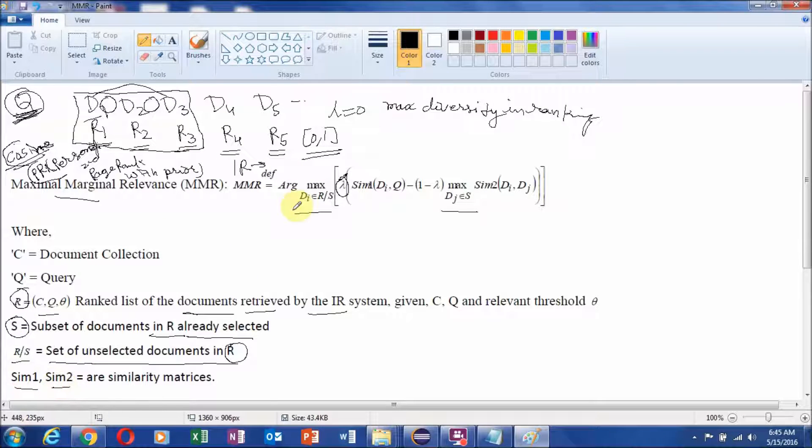So now based on that all rankings are prepared. Sim1 and Sim2 used here are just similarity measures. You can use any similarity measures like Jaccard, cosine similarity or any other similarity measures. Now Q represents our query. Now what is di and dj.